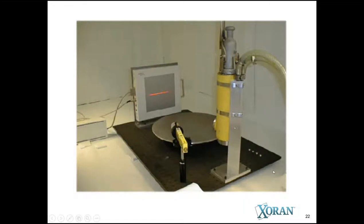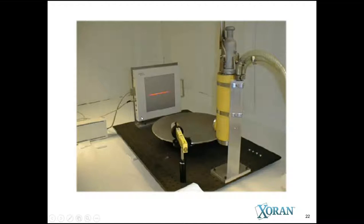Cone beam CT in particular works along the same principles but uses an x-ray source on one side and a flat detector on the other side — that's really one of the key elements of the technology. The best way to think of this is a reverse engineering of a flat screen TV. Most of you do have large flat x-ray detectors for your two-dimensional radiography. This time the detector is more sophisticated because it can capture a lot of images very, very quickly — many times per second.